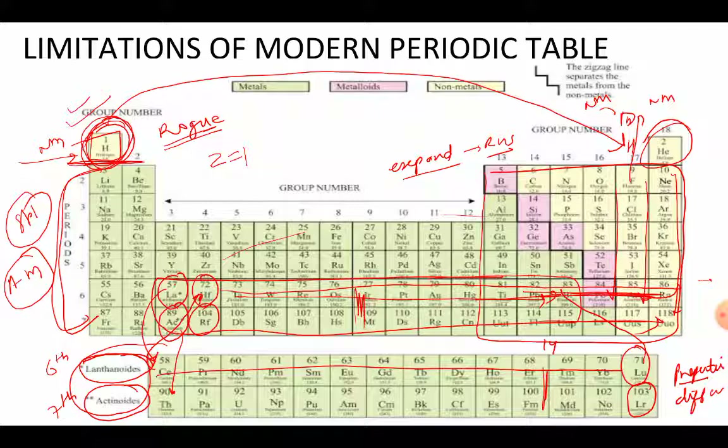Still this is a limitation, but I hope that these are not so strong limitations. The achievements of the modern periodic table are very strong as compared to the limitations. I hope that you are clear with the four achievements of the modern periodic table and the two limitations of the modern periodic table. Thank you everybody.